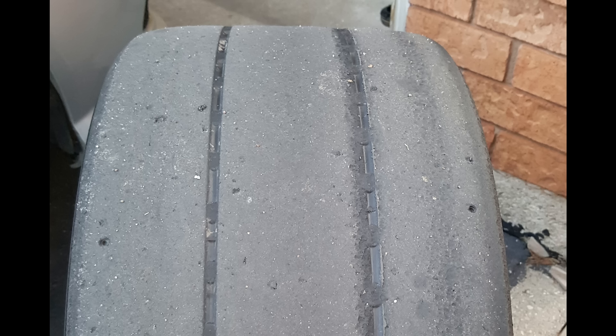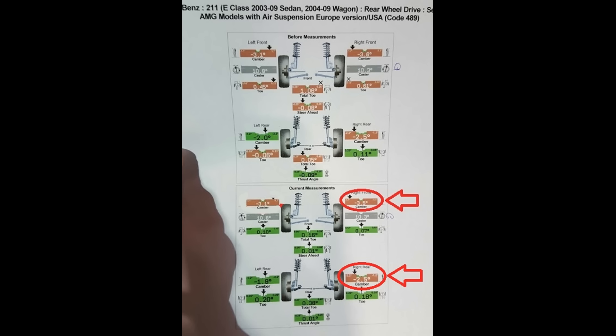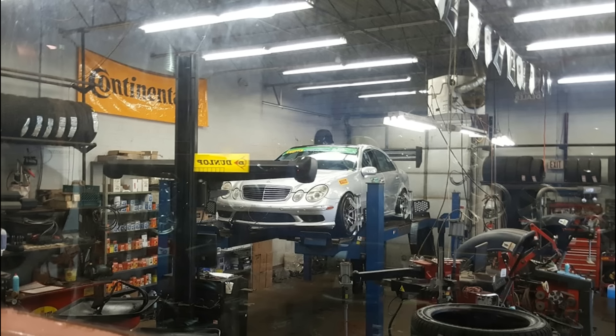Another benefit of setting your cambers properly is that it can make a big difference in tire wear. My set of tires on the E55 before making any changes had negative 1 degree of camber at the front from the factory — obviously not enough, because all the wear was on the outer edge of the tire and the inside looked pretty much new. After making proper camber adjustments, the wear is pretty much even on the outside and inside. My final numbers for the E55 were negative 3.5 degrees at the front and negative 2.5 degrees at the rear, though this will be different for every car and tire combination.